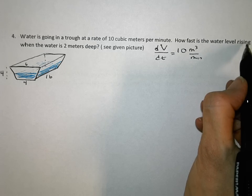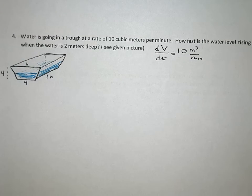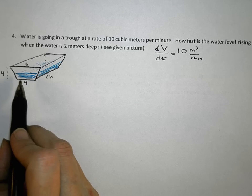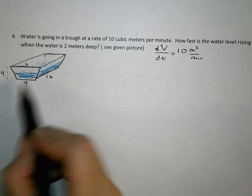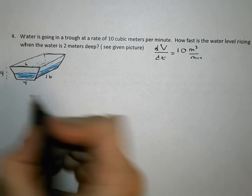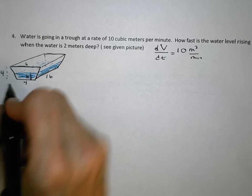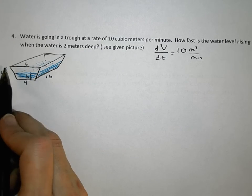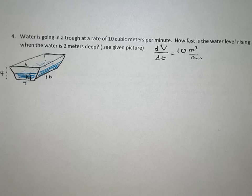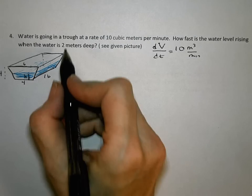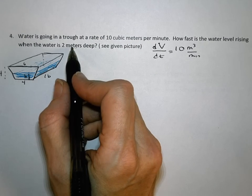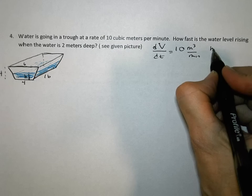How fast is the water level rising when the water is 2 meters deep? So you can see the water in this trough. This is like a horse's trough that the cowboy would bring his horse up to to get a drink. And we're going to call this depth right there h. If the trough was all the way full, it would be 4 high, so h is probably something less than 4. And as a matter of fact, at this one certain time they're asking about, h is 2.